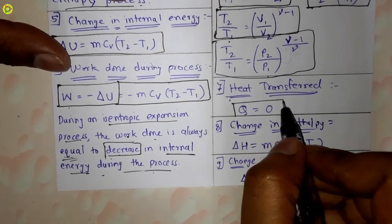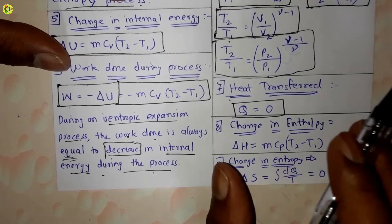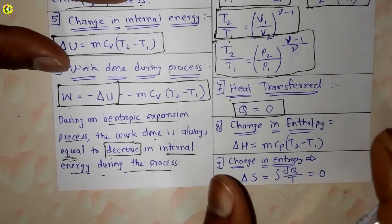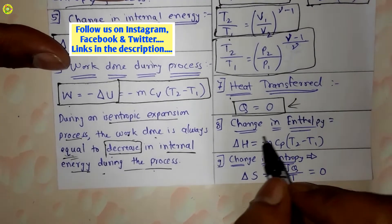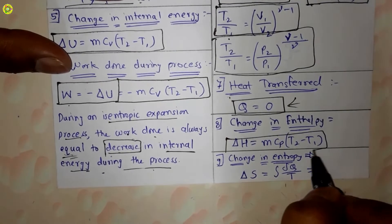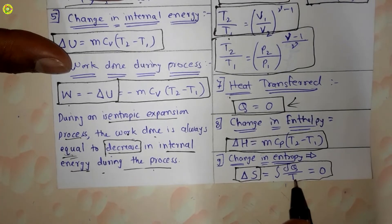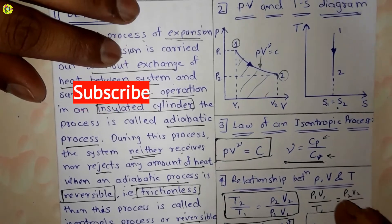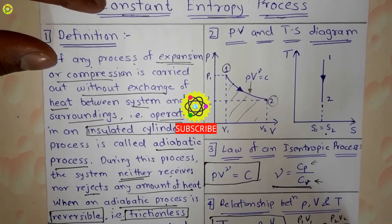Heat transferred is zero for the constant entropy process, as this is an adiabatic process with no exchange of heat between the system and surroundings, so Q equals zero. Change in enthalpy is delta H equals m Cp into bracket T2 minus T1. Change in entropy delta S equals integration of delta Q upon T, which equals zero, confirming S1 equals S2 for a constant entropy process.